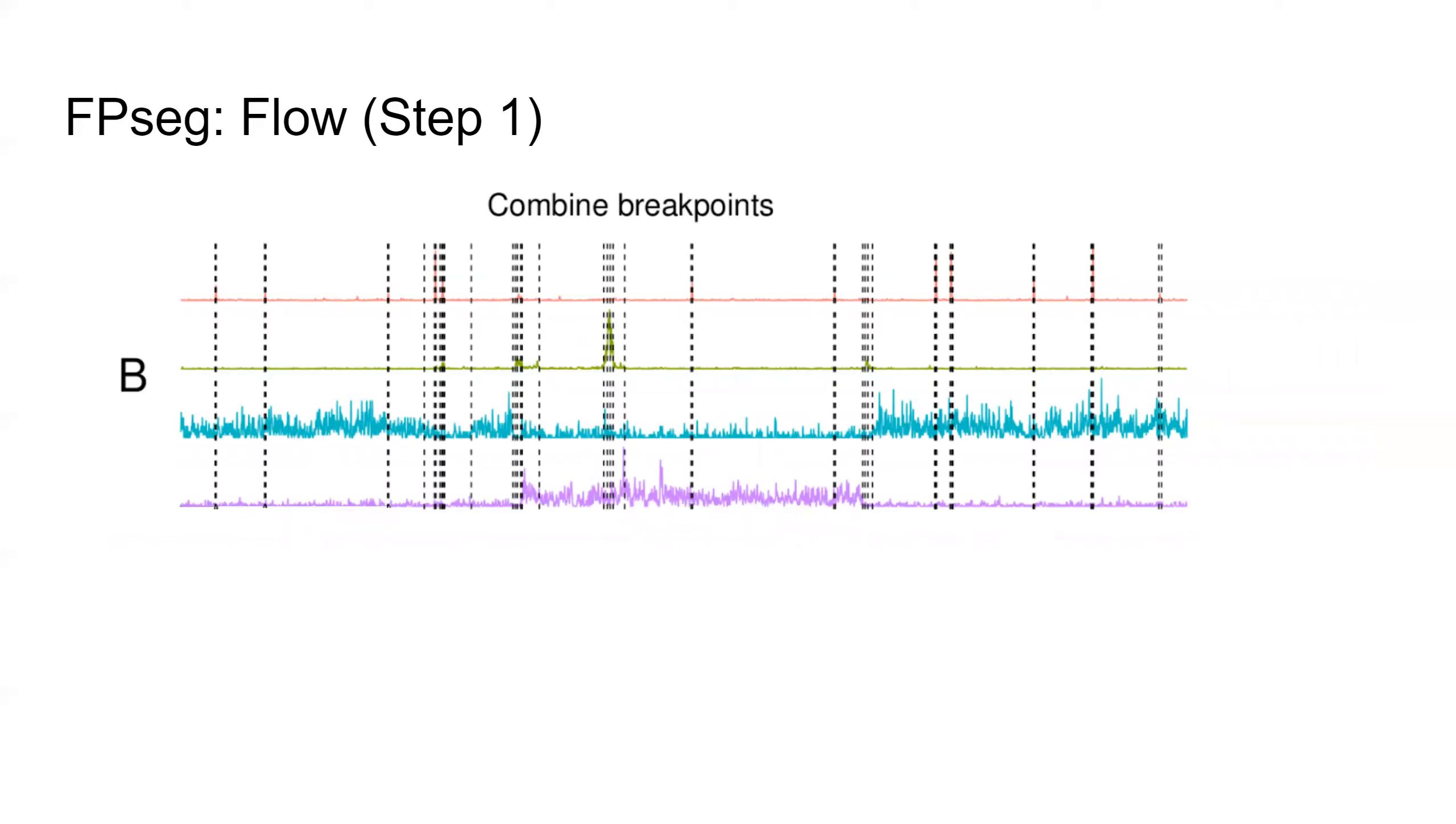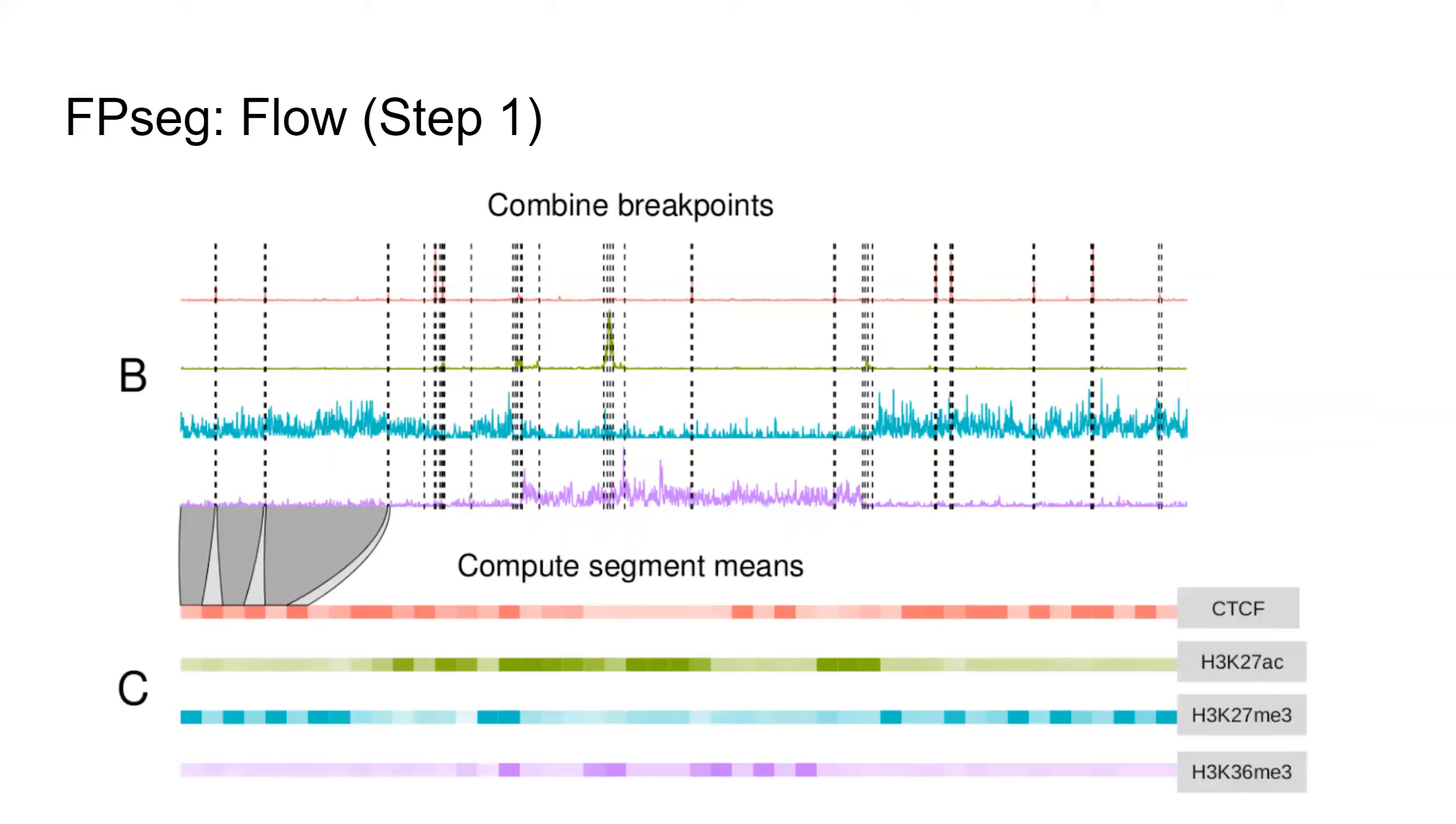And then we combine the breakpoints from every track into a single breakpoint set and calculate the segment means between breakpoints for each track. This way we reduce the size of the data and minimize the effect of the noise.